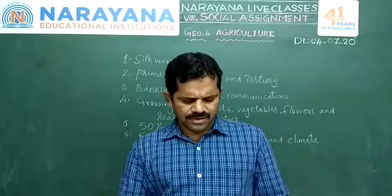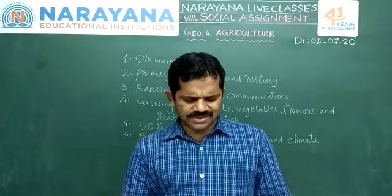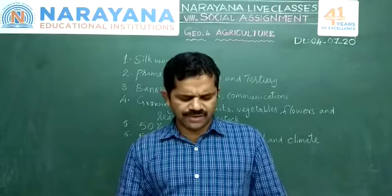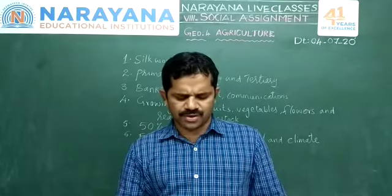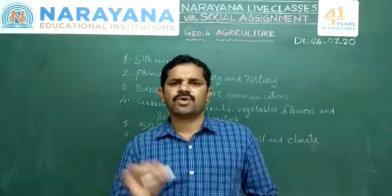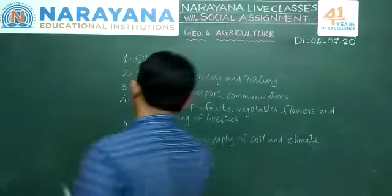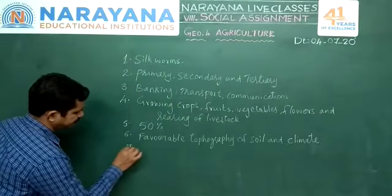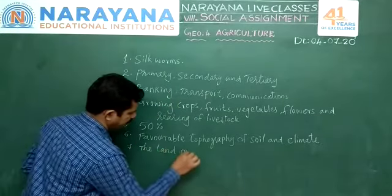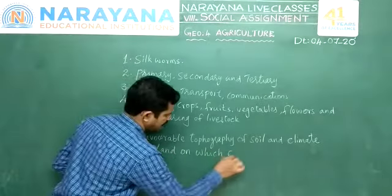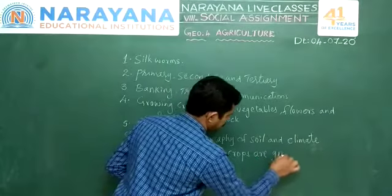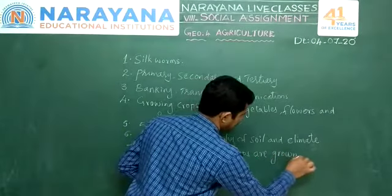Question number 7: Which land is called arable land? The land on which crops are grown is known as arable land. Arable lands are not barren land — they are productive lands on which crops are grown.